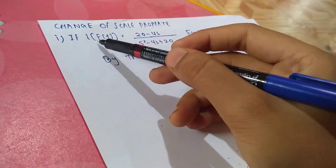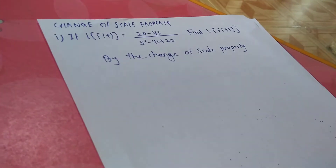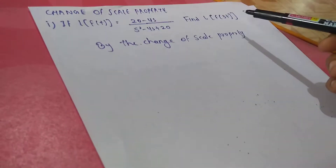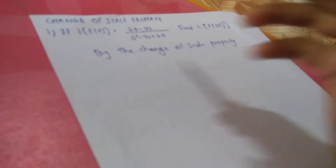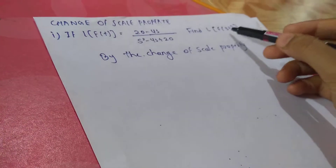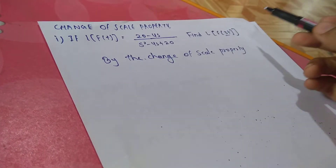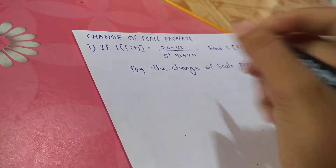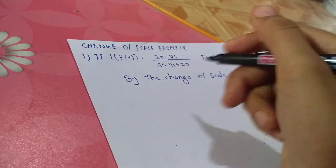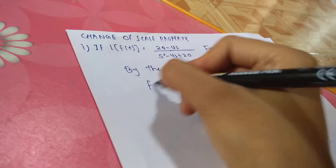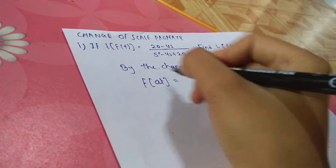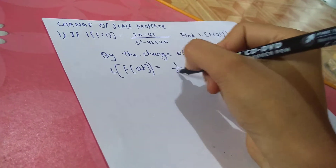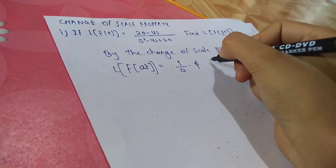If it has given something and it asks for a double or triple scale, then you have to apply the change of scale property. Here you have f(t) and it has been asked for f(3t). So according to the formula, by the change of scale property, L{f(at)} = (1/a) · F(s/a).